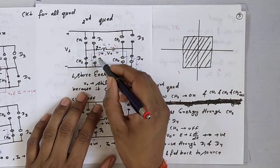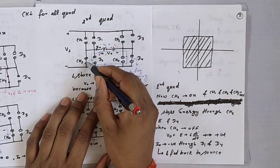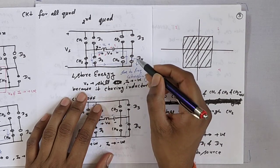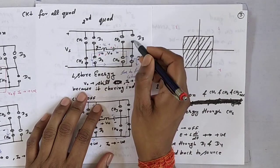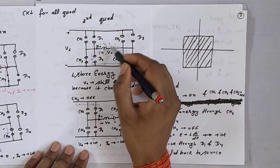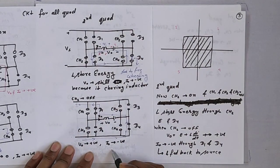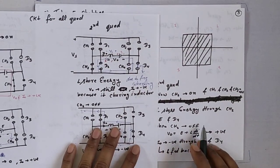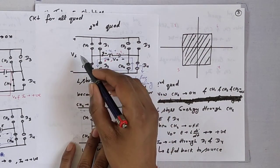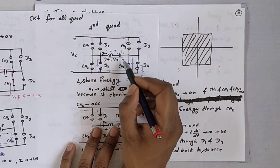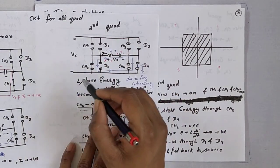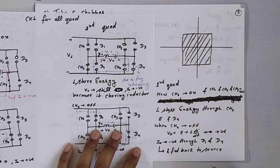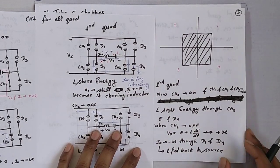In the second quadrant, the polarity of current is changed and voltage V0 is zero — not negative. When CH2 is off and D1 conducts, V0 becomes positive and I0 is negative. The output voltage V0 becomes greater than VS, and the energy stored in the load is fed back to the source. So current is negative and voltage is positive, meaning power stored in the load energy is fed back to the source.